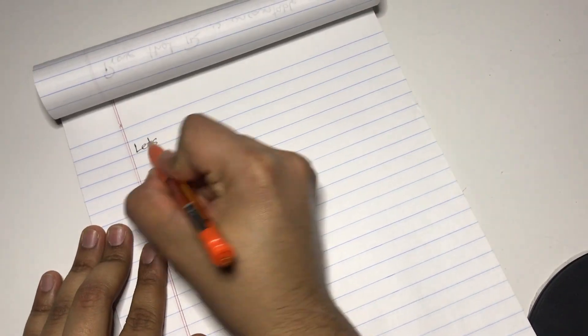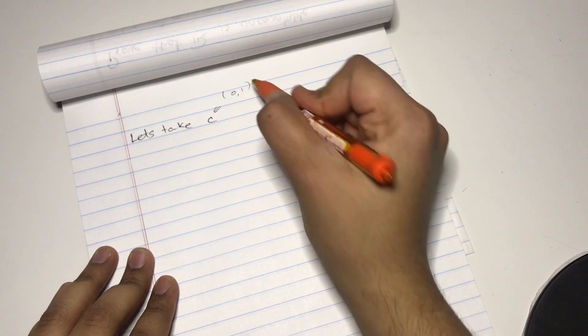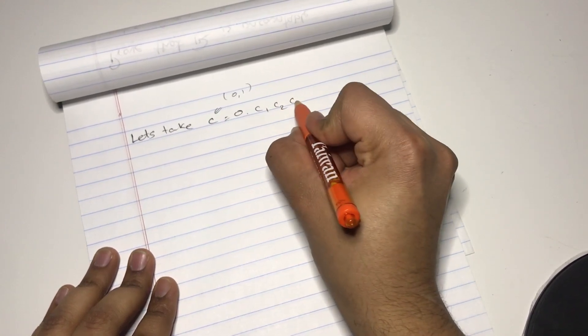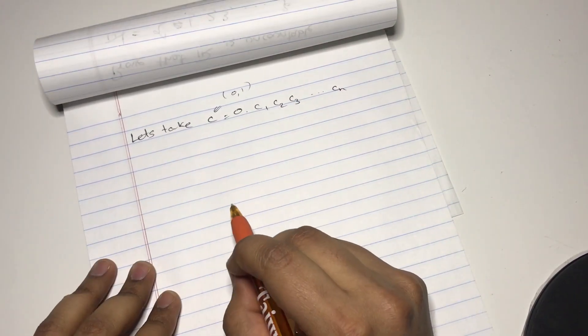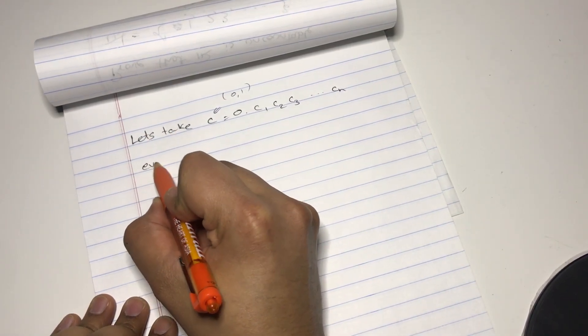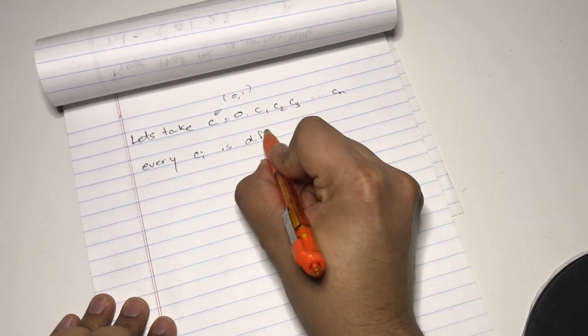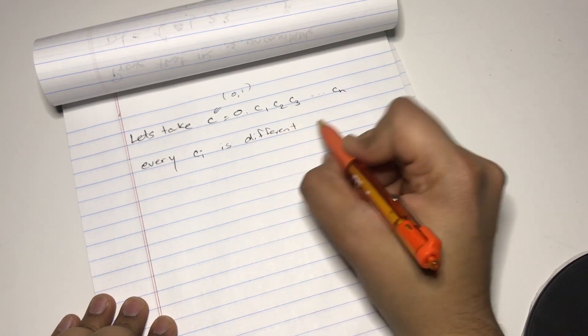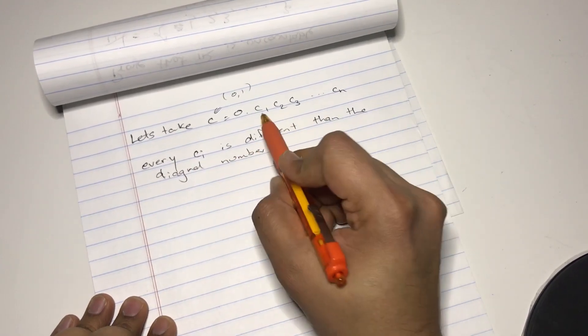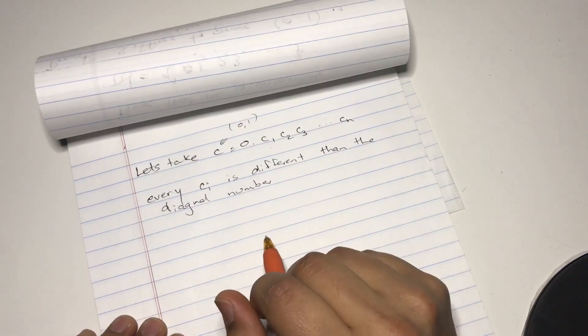Let's take c, which is another number, which is between the bracket 0 to 1. Let's have c equal 0.c1, c2, c3, cn. This is a new number, a new real number. But it's a unique number because every ci is different than the diagonal number.